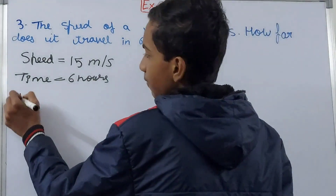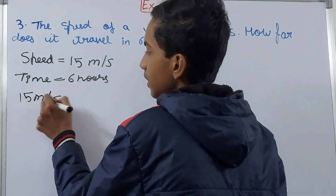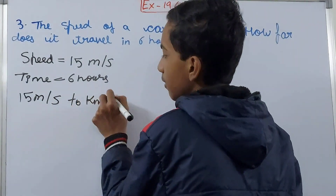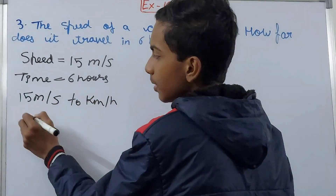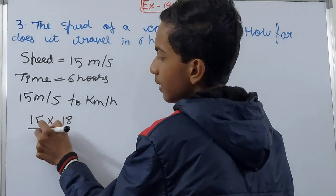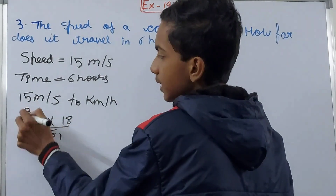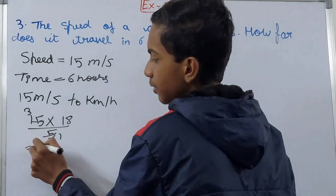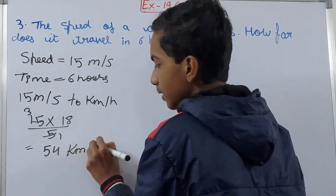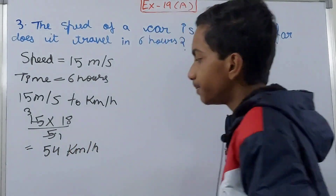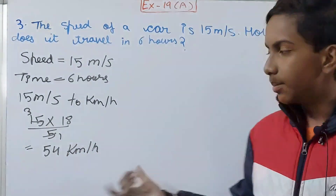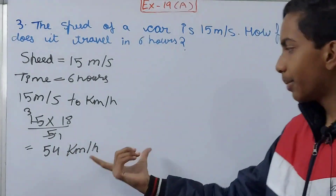To convert meters per second to kilometers per hour, multiply by 18/5. So 15 meters per second times 18/5: 15 times 18 is 270, divided by 5 gives 54 kilometers per hour. This becomes our speed in the kilometer per hour unit.